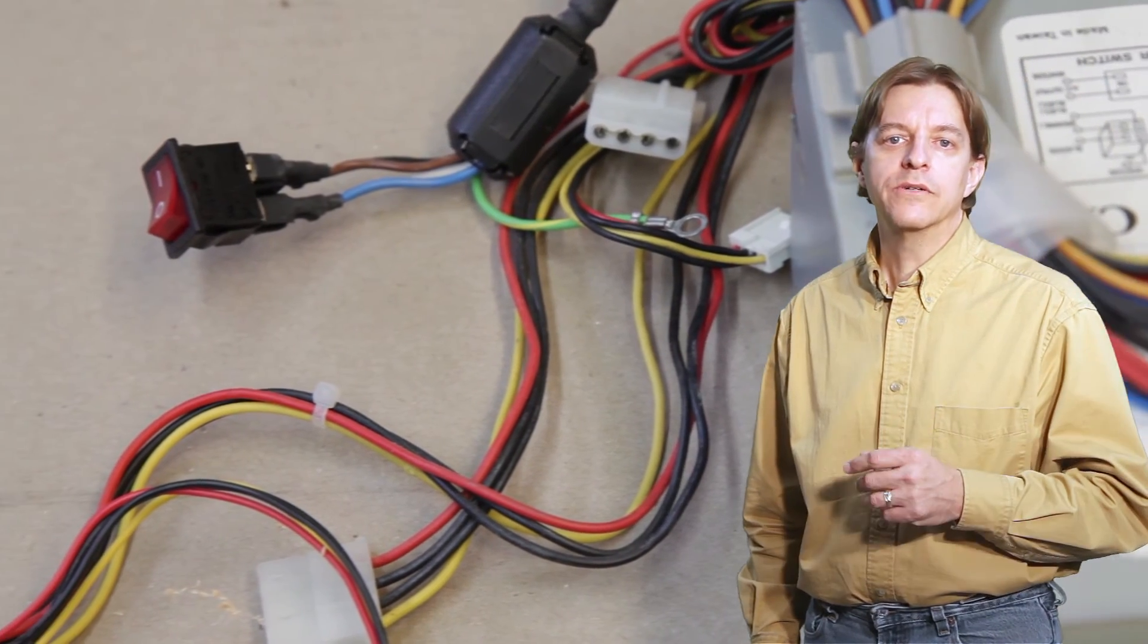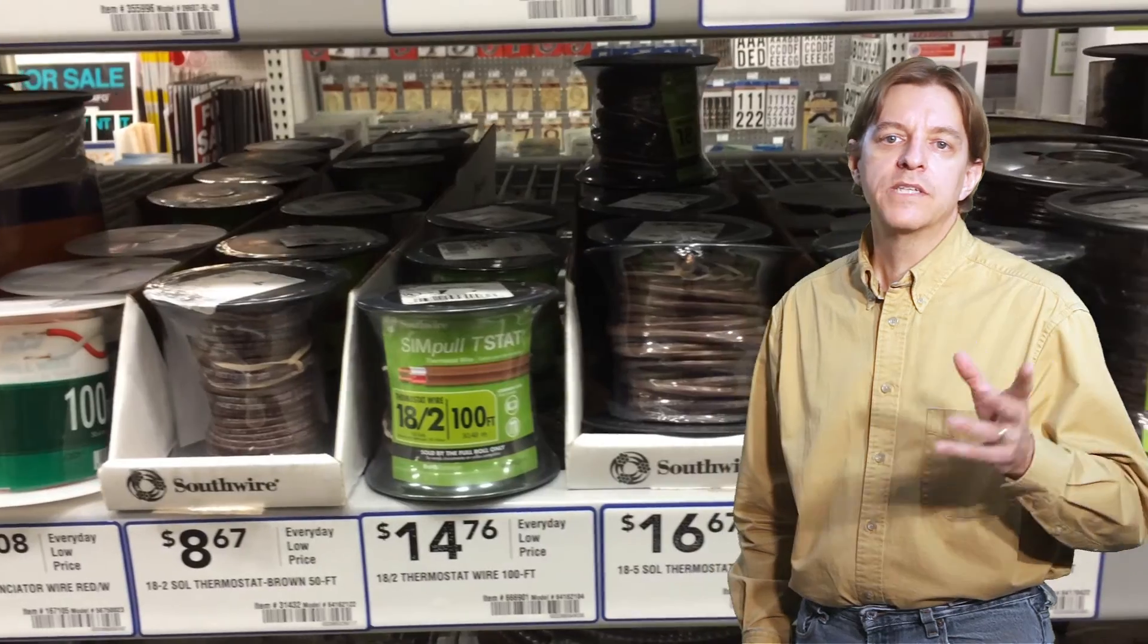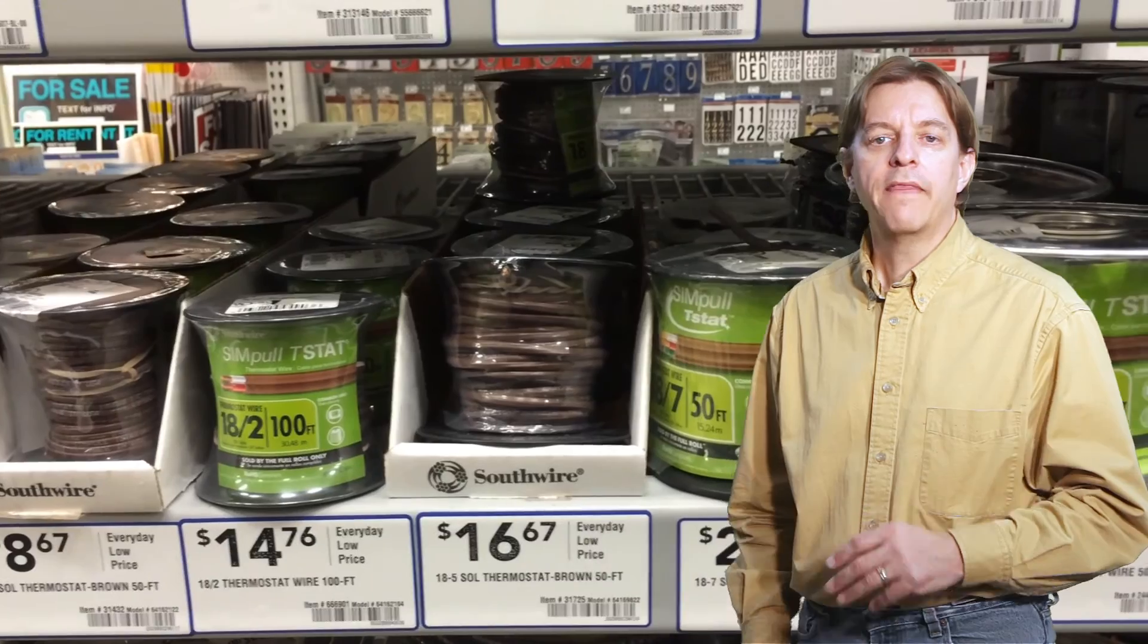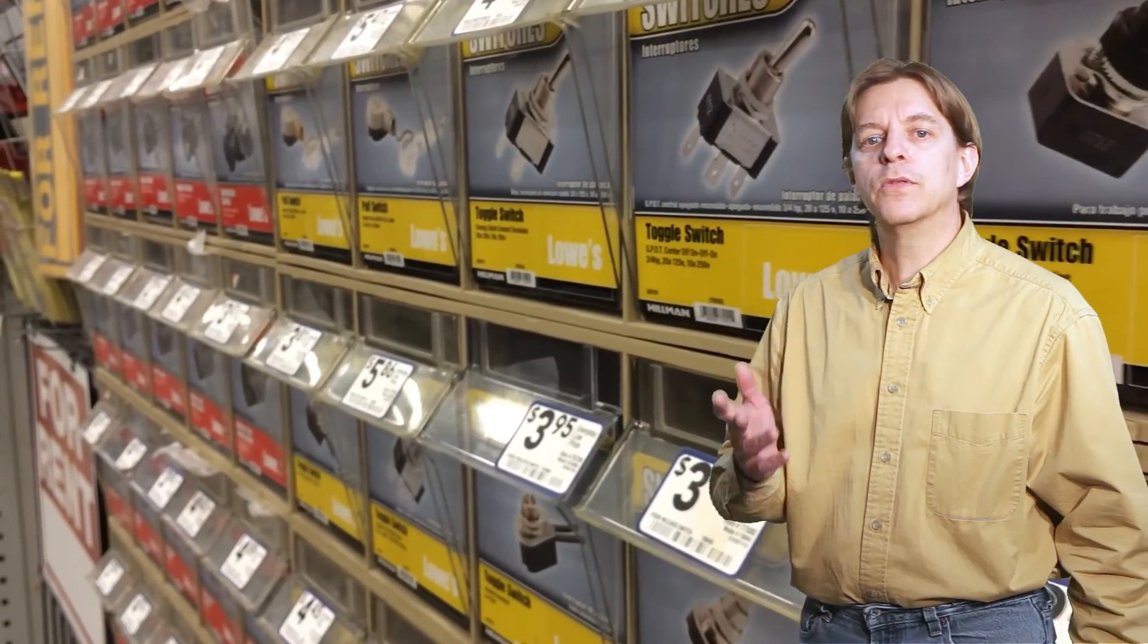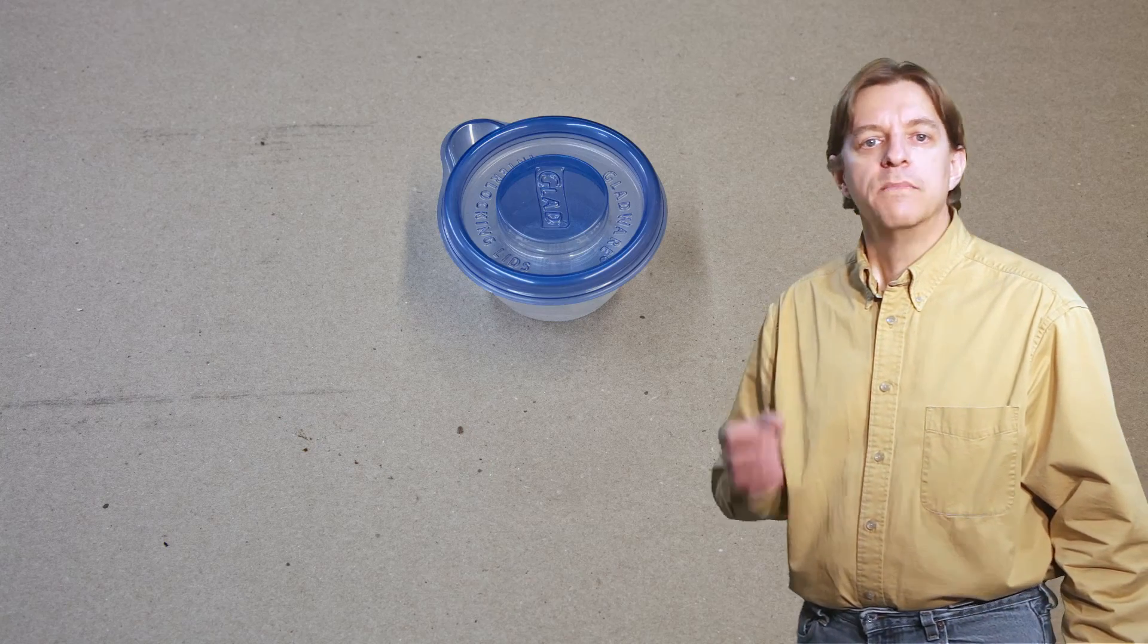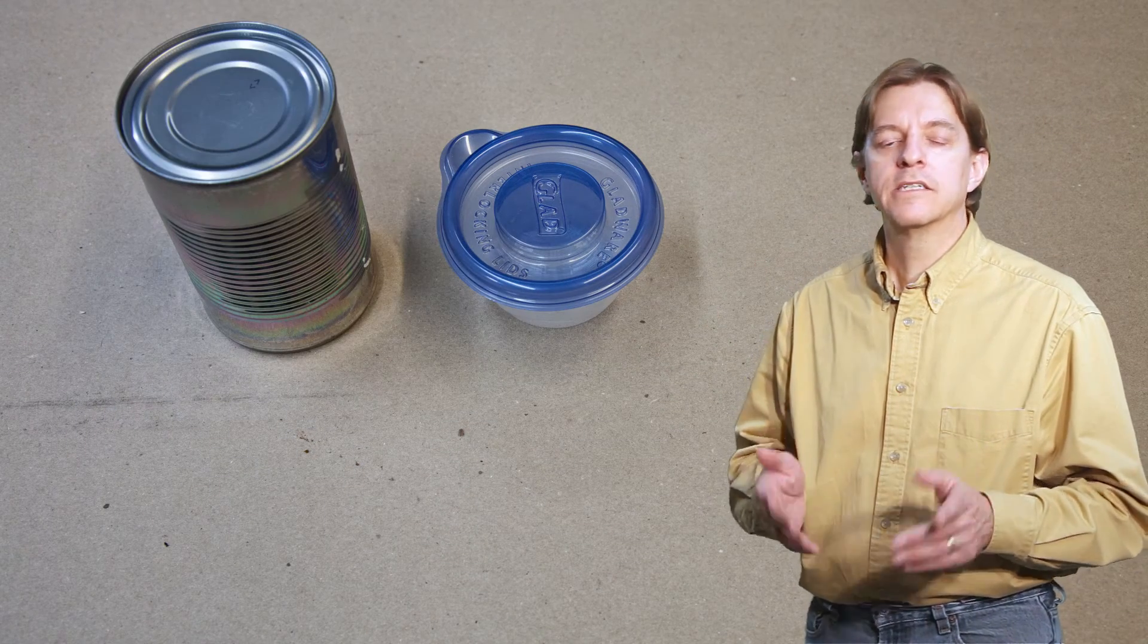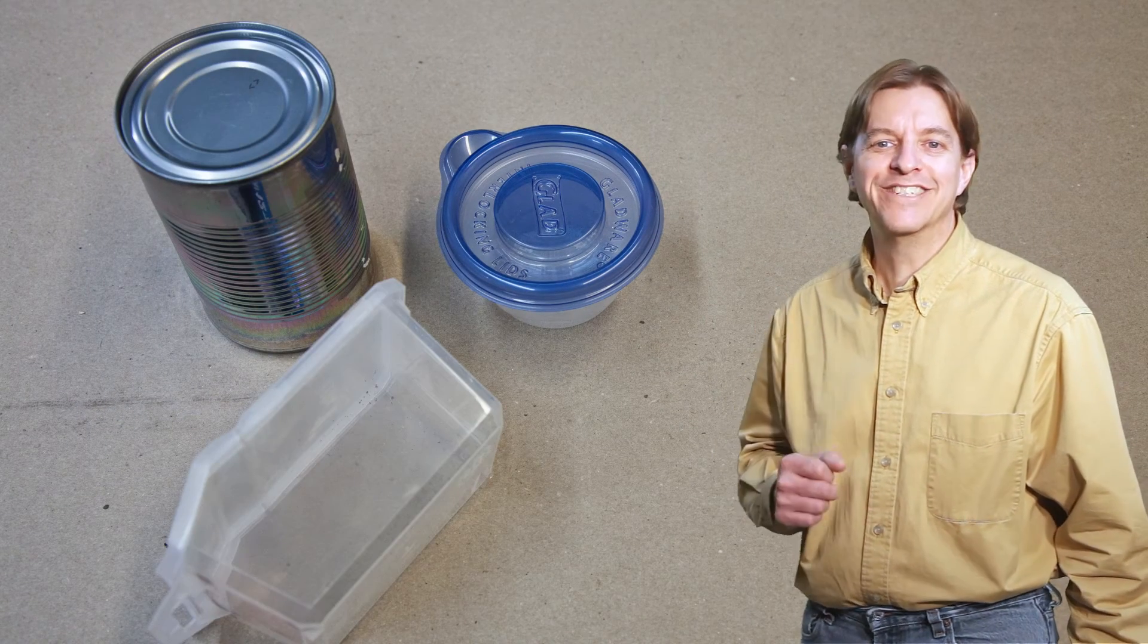Switches can be scavenged from dead electronics. Or you could get new materials. Low voltage wire is a couple cents a foot at the home improvement stores and they have a wide variety of switches for a couple dollars each. A box to mount the switch in could be anything from a disposable food container to something more robust. Just use your imagination.